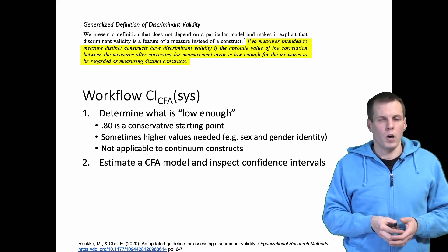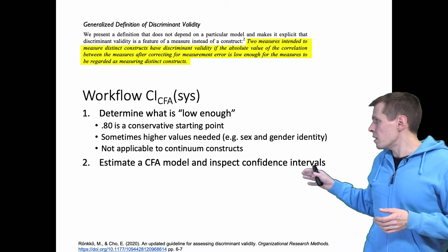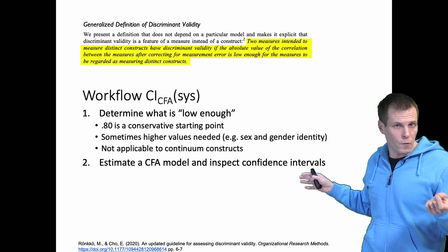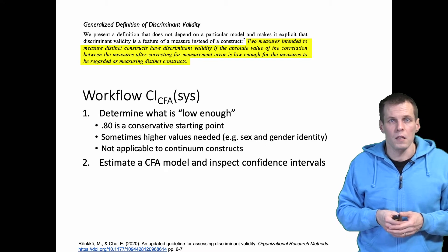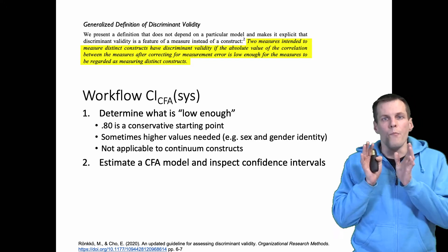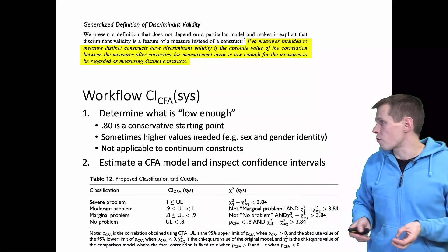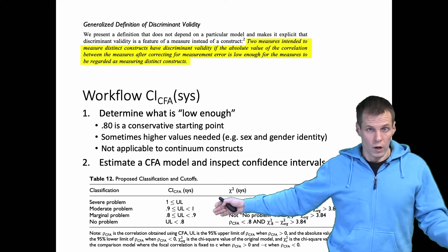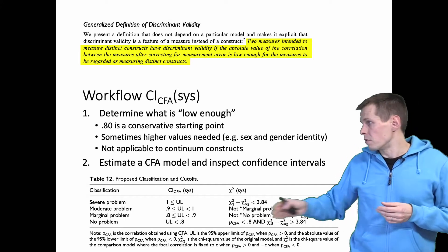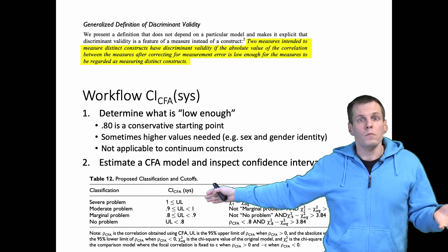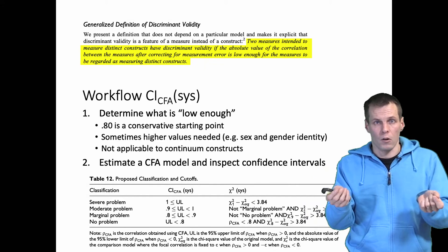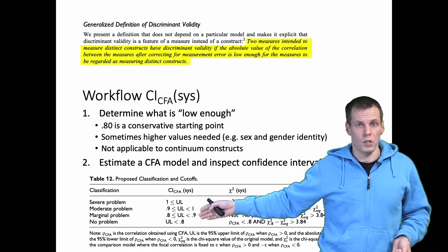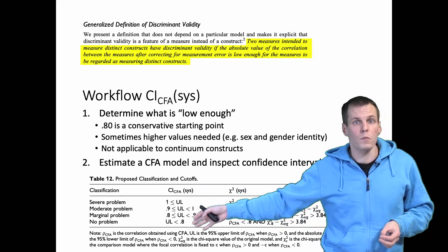Then we estimate a confirmatory factor analysis model and inspect the confidence intervals of the correlations. We recommend this is done by fixing the factor variances to one instead of scaling the factors by fixing the first loadings. Alternatively, you can simply request standardized estimates from the statistical software and inspect the confidence intervals based on those. Then you determine a class for each correlation by looking at the upper limit of the confidence interval — or the lower limit for a negative correlation. If the upper limit exceeds one, the perfect correlation, you always have a severe problem and cannot say the two factors are empirically distinct at all.